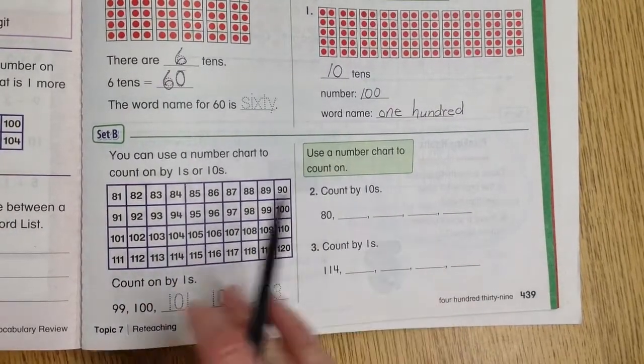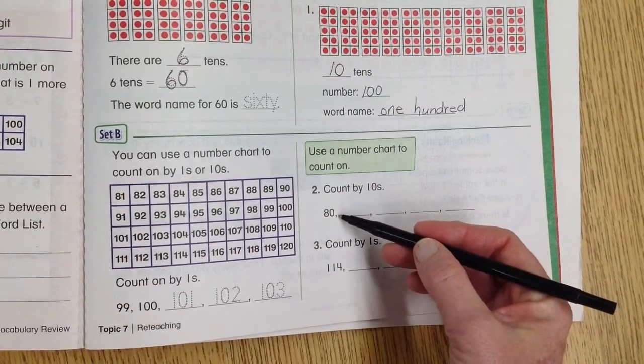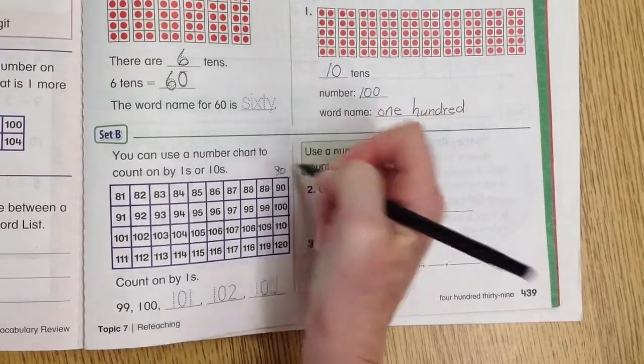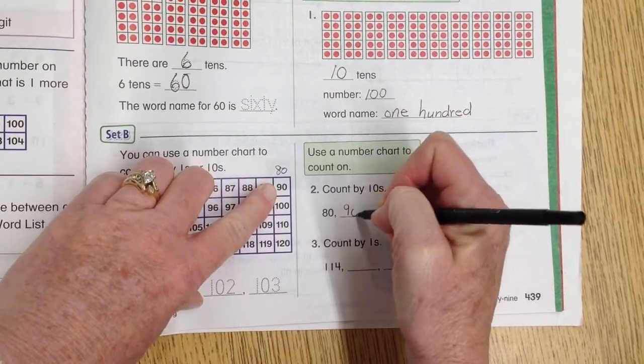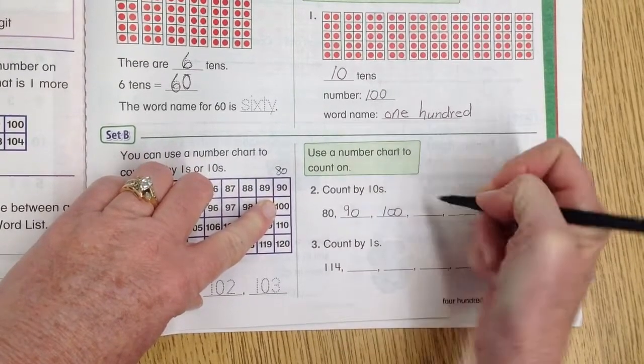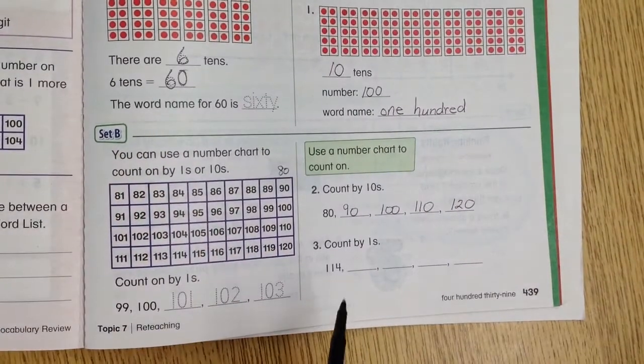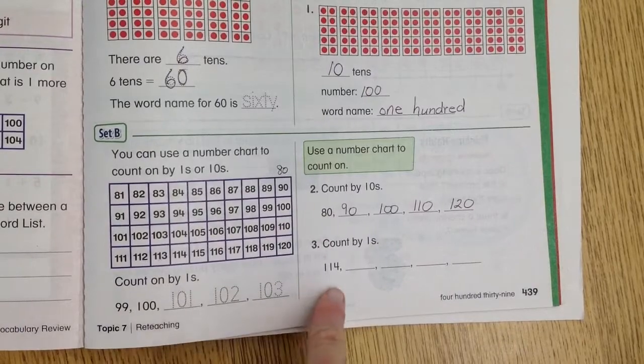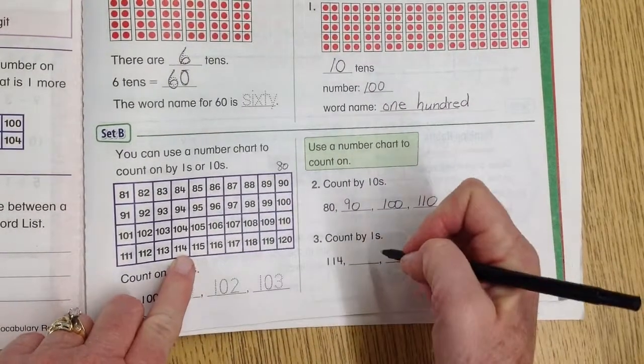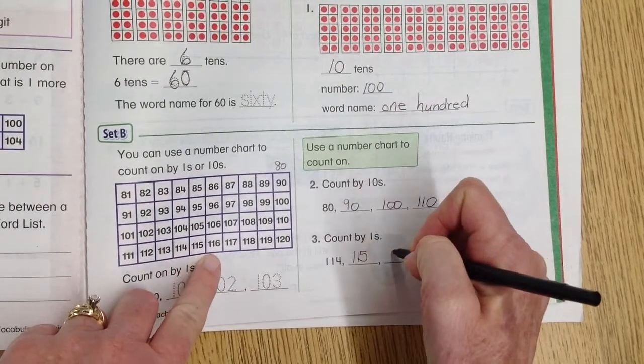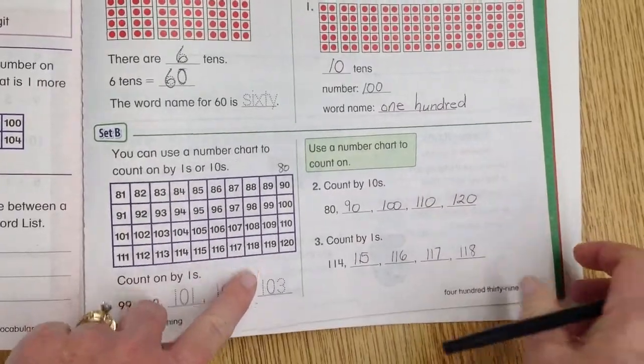Number two says use the number chart to count on by tens. So they say to start at 80. So 80 would be up here, wouldn't it? So by tens, we're going to go down: 80, 90, 100, 110, 120. Number three, they want to count by ones, so we're going to go across starting at 114. So we find that on the chart, and we go across: 115, 116, 117, 118.